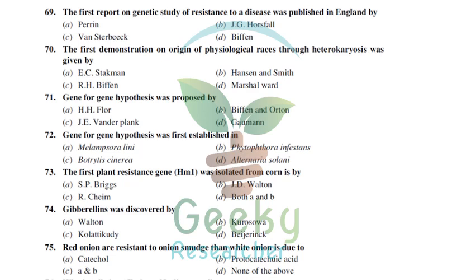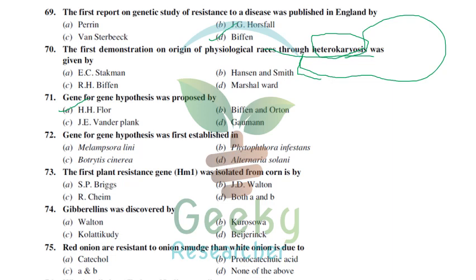The first report on genetic study of resistance to disease was published by Biffen in England. The first demonstration of the origin of physiological races through heterokaryosis was demonstrated by Hansen and Smith in 1932. The gene-for-gene hypothesis was proposed by H.H. Flor (Henry Harold Flor), first established in the crop Melampsora lini — linseed rust. The first plant resistance gene is HM1, isolated from corn by Briggs and Walton.